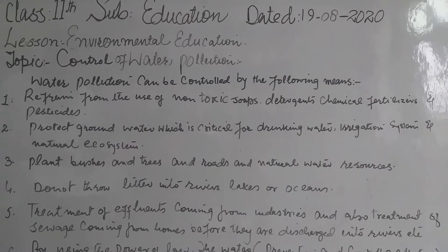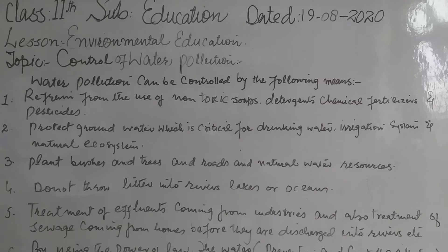Number one: control of water pollution in your home by using non-toxic soaps, detergents and cleaning products. Refrain from the use of chemical fertilizers and pesticides in your lawns and gardens. Always dispose of paints, motor oil, gasoline, antifreeze and other harmful chemicals in accordance with your local laws and safety regulations.